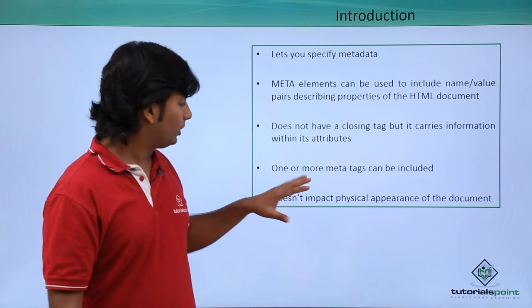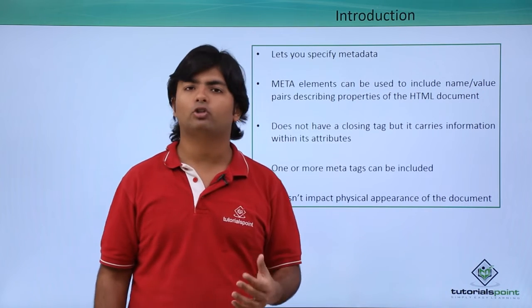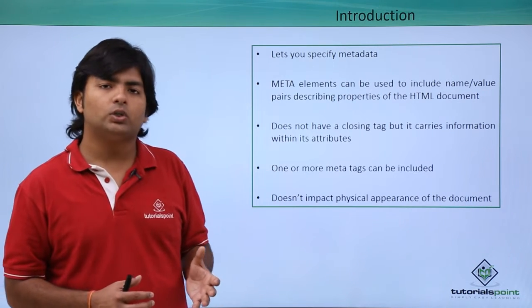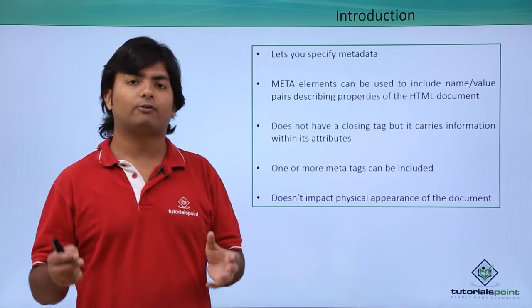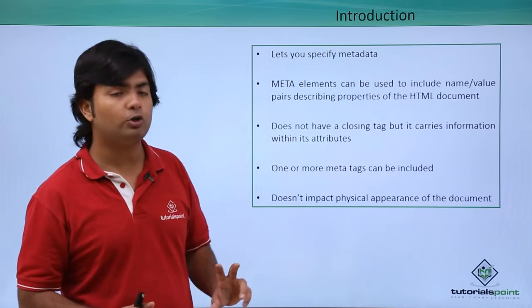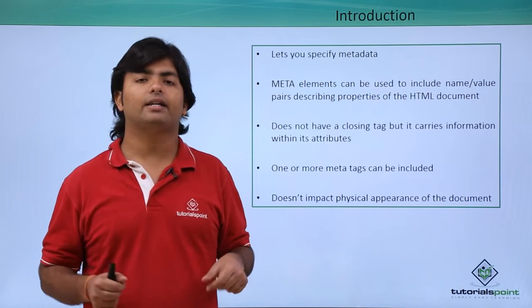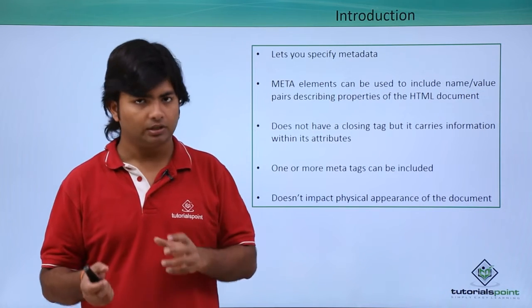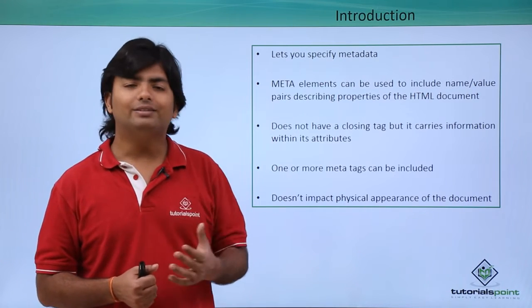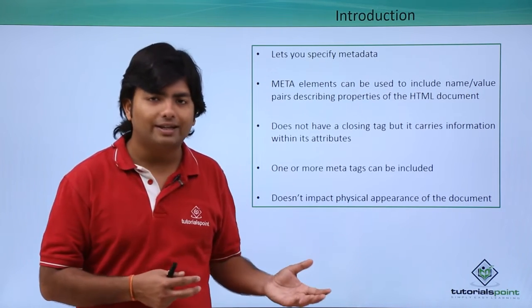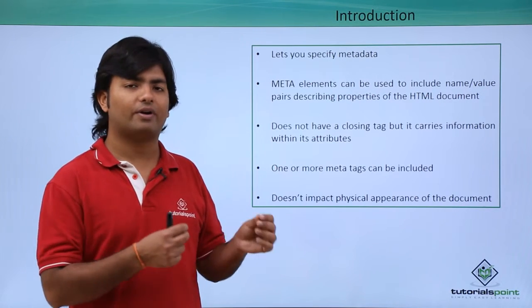We can have more than one meta tag — for example, one for keywords, one for description, and so on. Meta does not impact the physical appearance of the document. Whatever you see in the browser output is in the body part, but the meta tag goes inside the head. It contains metadata, not any formatting information, so it will not impact the output. Let's see what attributes are available for the meta tag and how to write it in the head section of HTML.